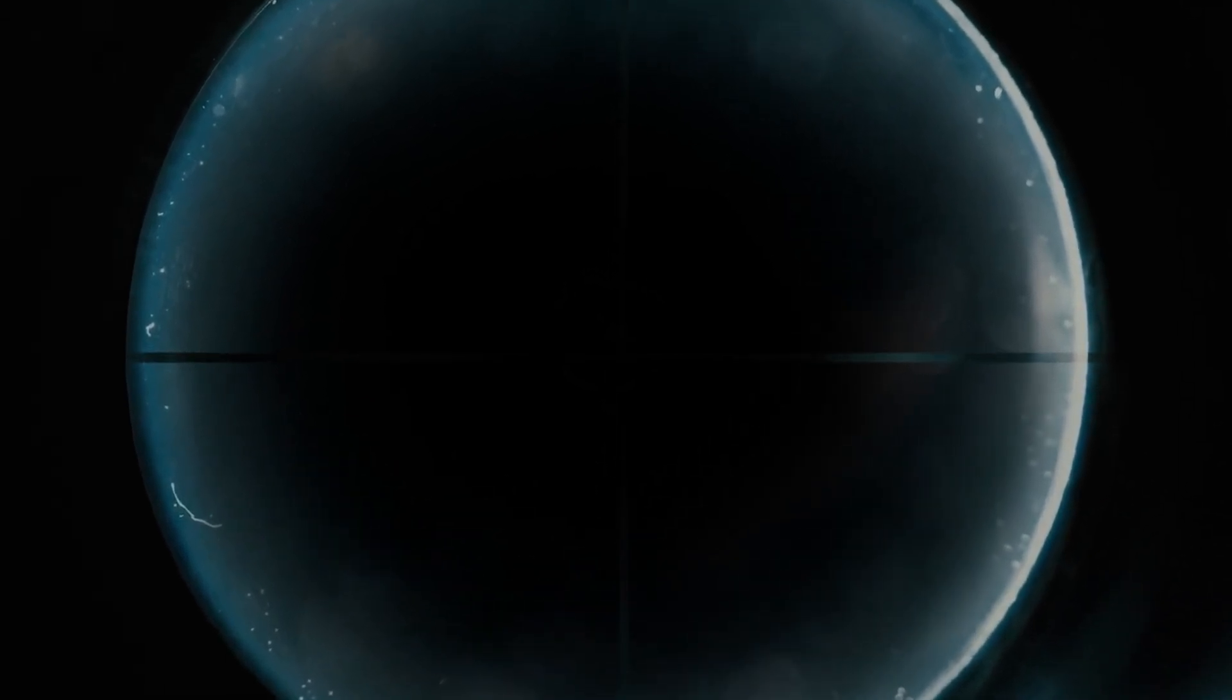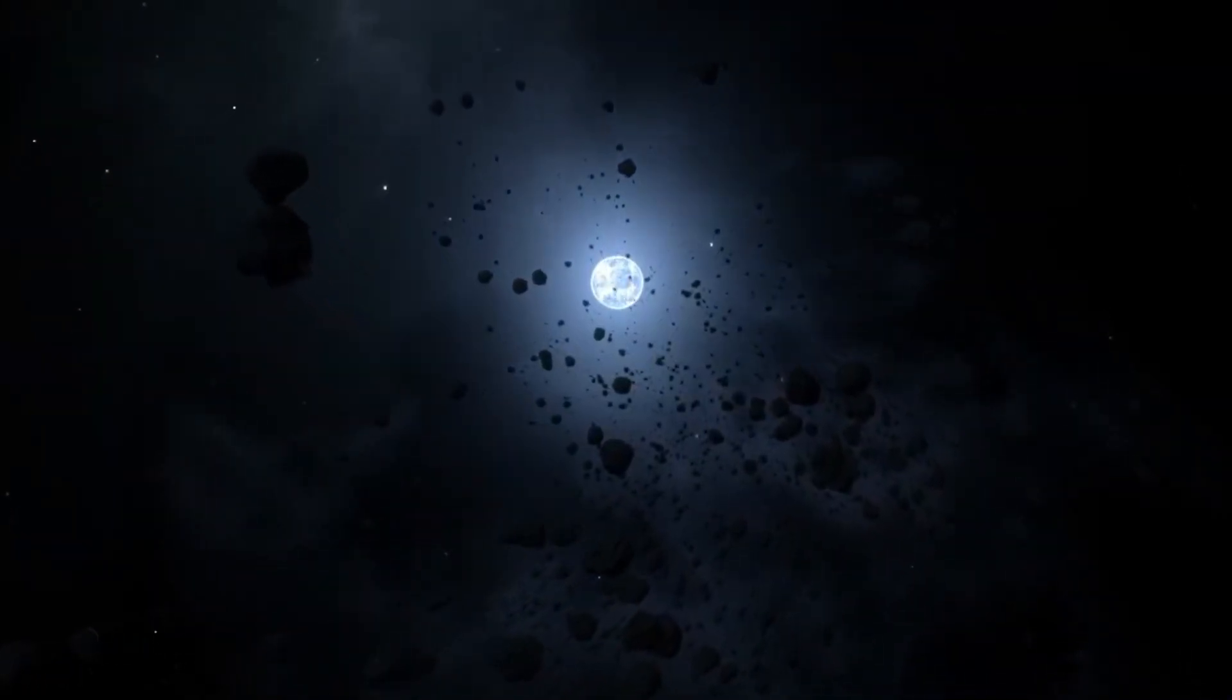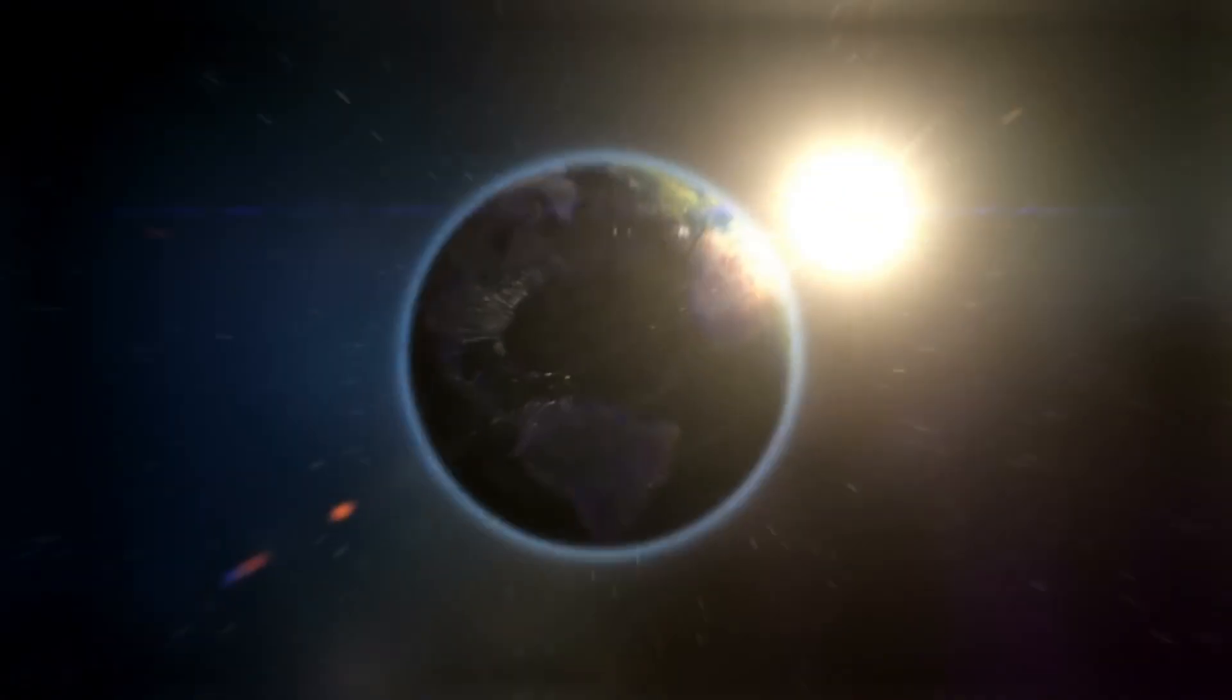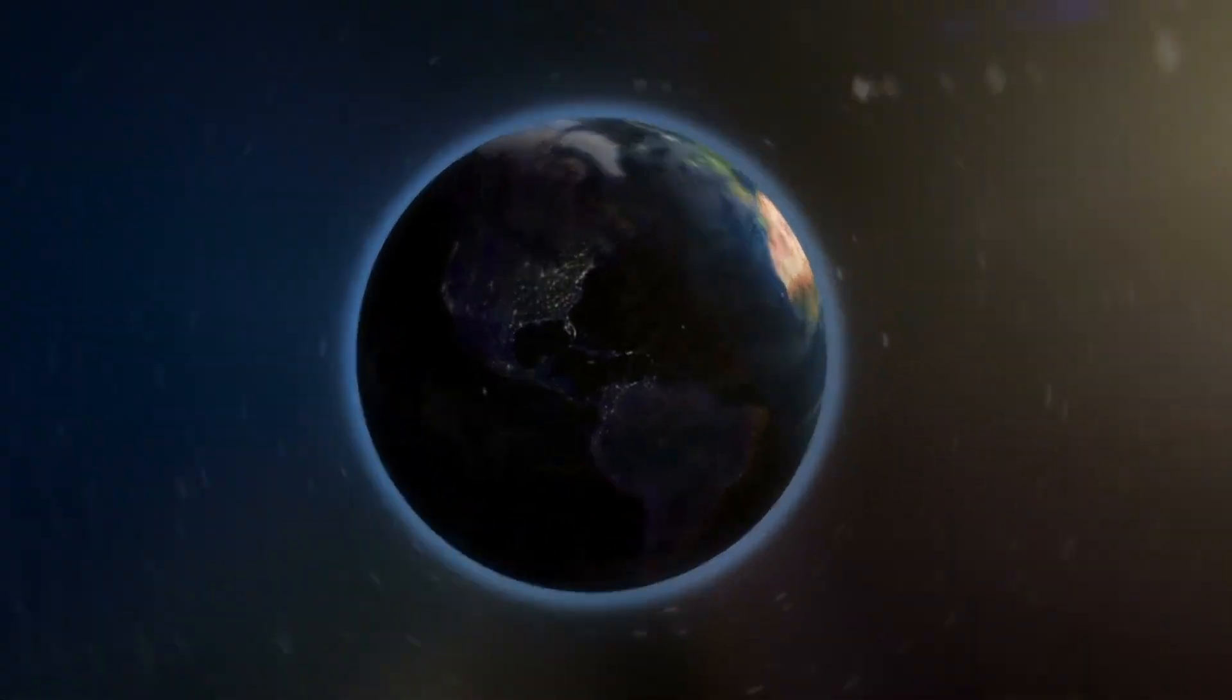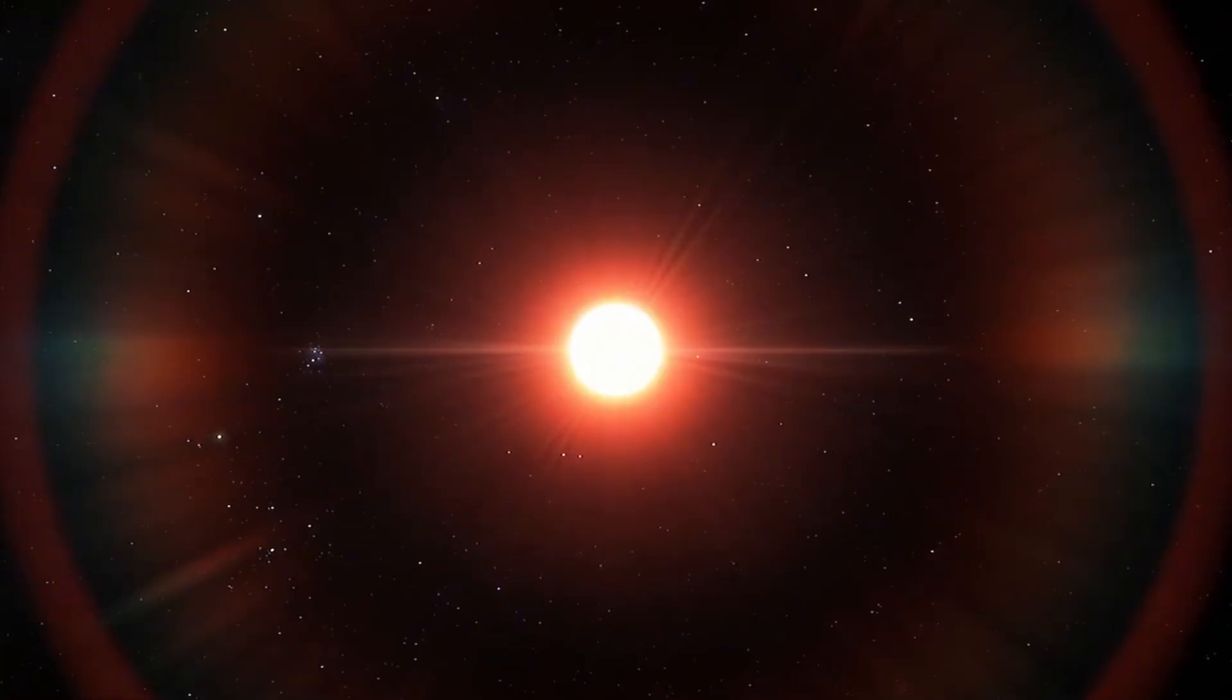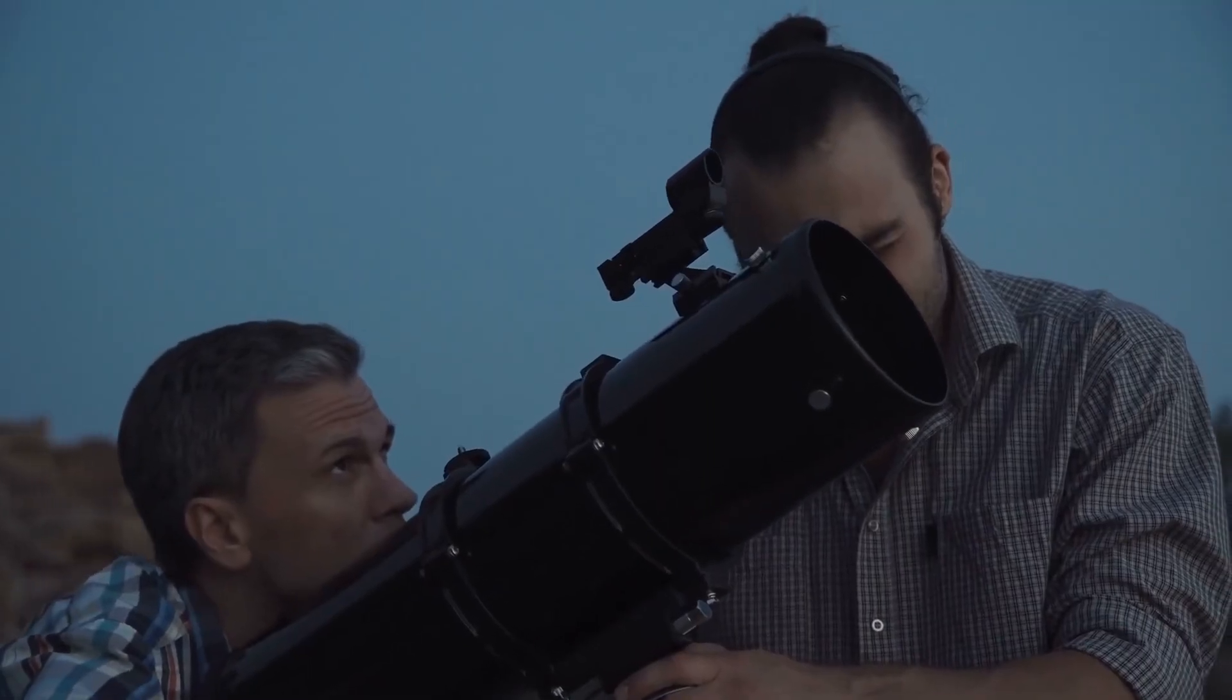This newly discovered system, dubbed KMT-2020-BLG-0414, is located about 4,000 light-years away near the dense bulge at the center of the Milky Way. It consists of a white dwarf, a remnant of a once-vibrant sun-like star, an Earth-sized planet, and a brown dwarf, which is a failed star that didn't have enough mass to ignite nuclear fusion.